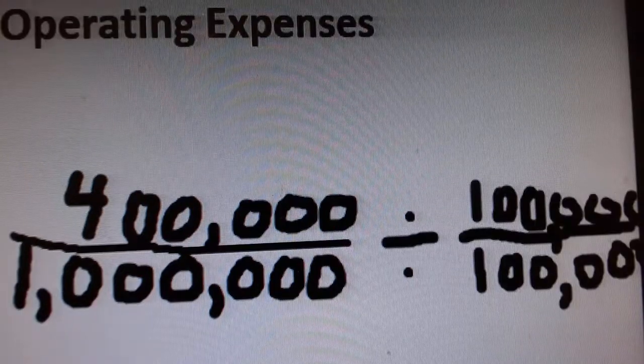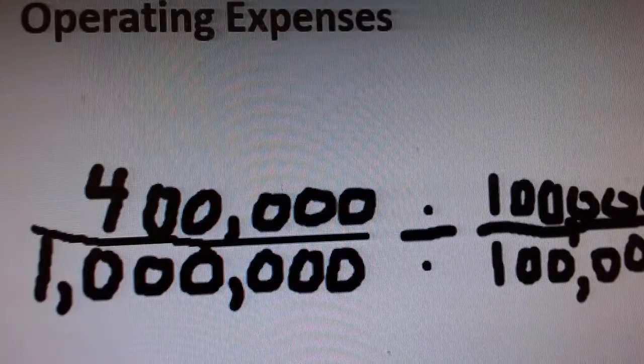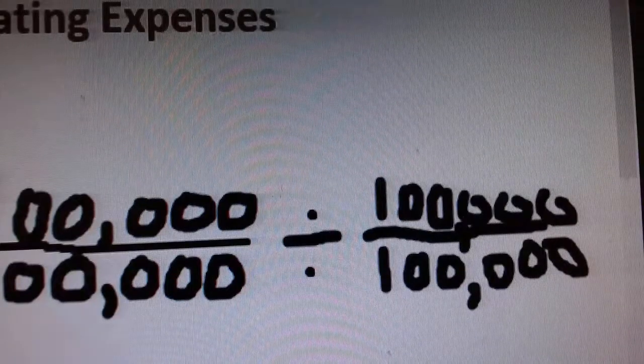This is the same as taking 400,000, dividing it by 100,000 to get 4, and a million divided by 100,000 to get 10.